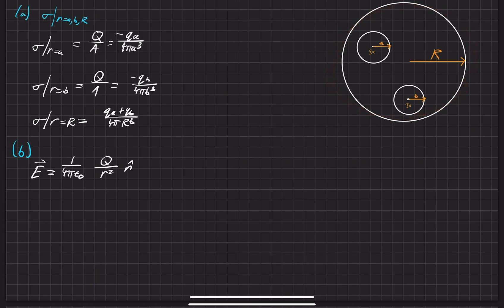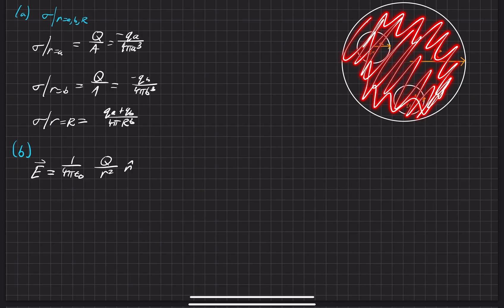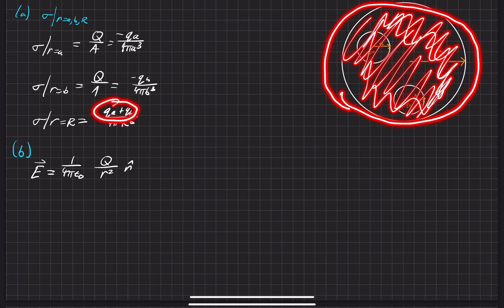The way superposition works is that we can essentially ignore everything that happens on the inside of the sphere. Looking on the outside of the sphere, since we have this total amount of charge placed on the outside,